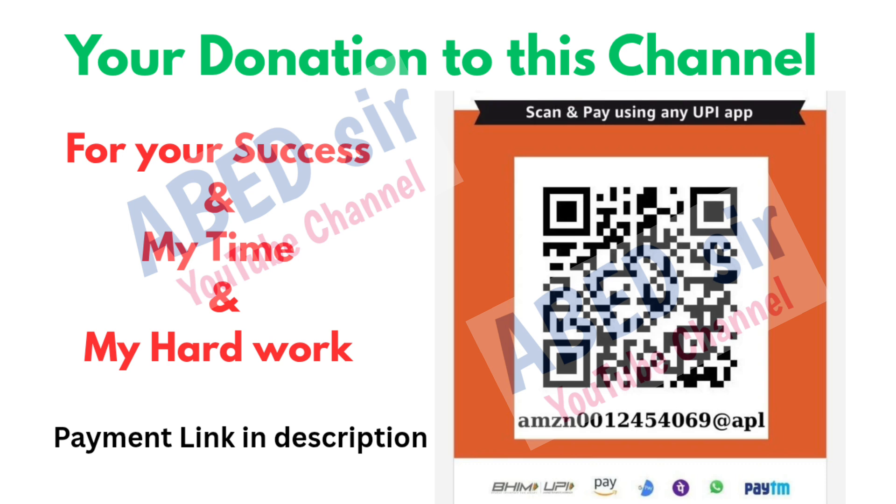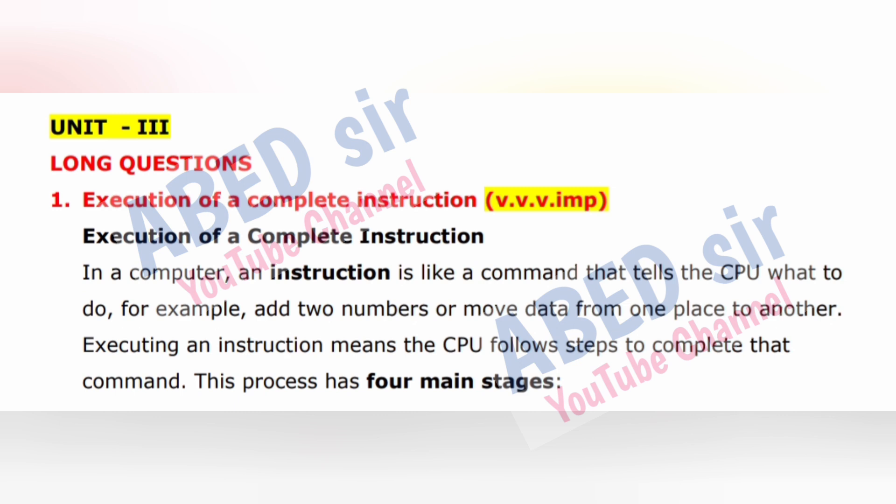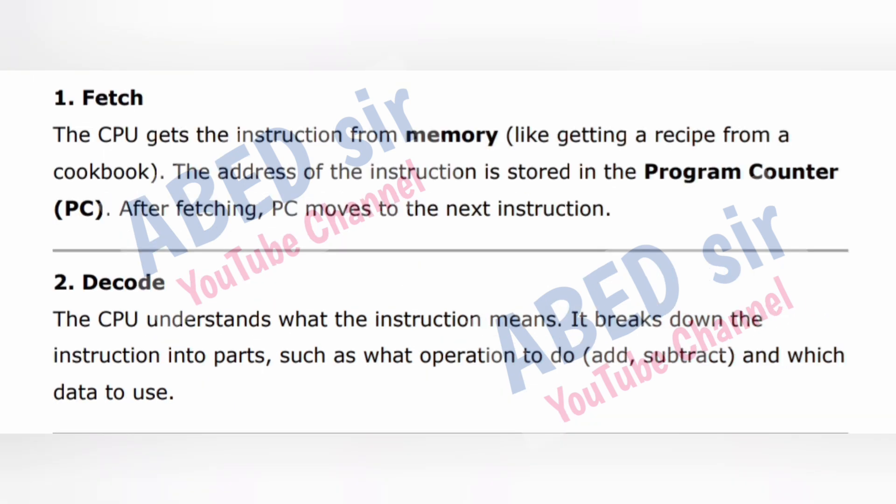Next, Unit 3 Long Questions. First important long question: Execution of a Complete Instruction. In a computer, an instruction is like a command that tells the CPU what to do — for example, add two numbers or move data from one place to another. Executing an instruction means the CPU follows steps to complete that command. This process has 4 main stages. 1. Fetch: The CPU gets the instruction from memory, like getting a recipe from a cookbook. The address of the instruction is stored in the Program Counter (PC). After fetching, PC moves to the next instruction. 2. Decode: The CPU understands what the instruction means. It breaks down the instruction into parts, such as what operation to do (add, subtract) and which data to use.